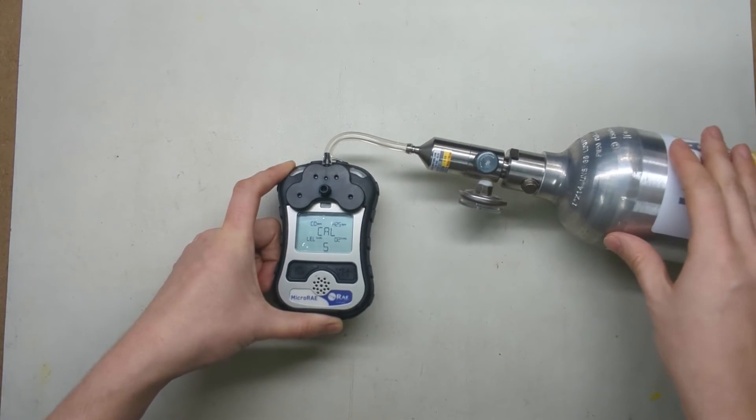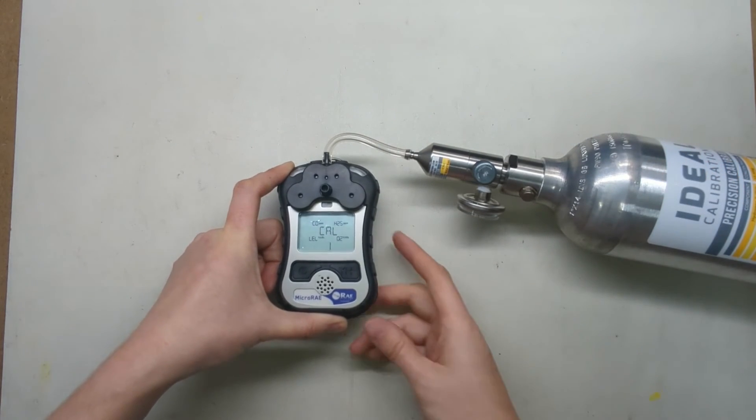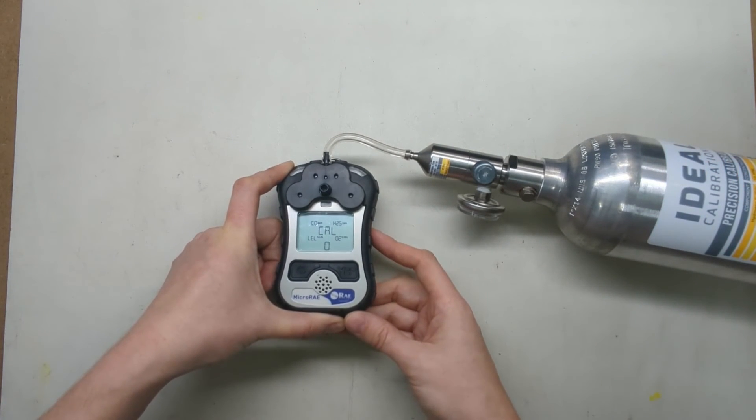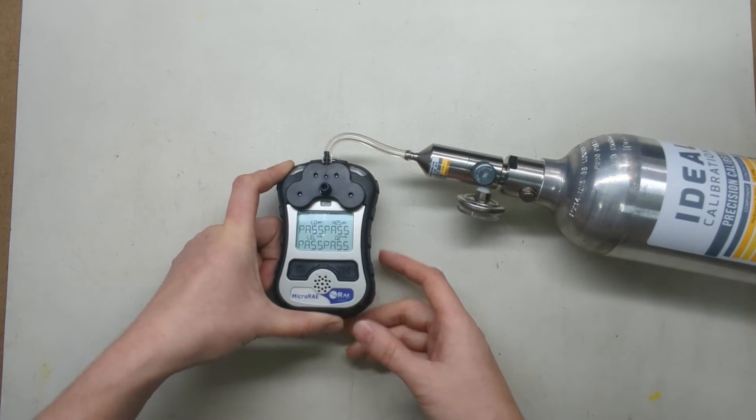Generally your solution to most problems with gas detectors is to give them a calibration. Give them a good zero in fresh clean air, give them a calibration, and see how they perform. That'll tell you if you have any sensor errors.